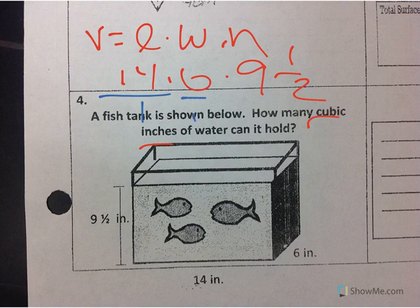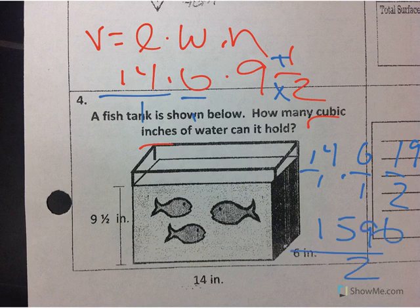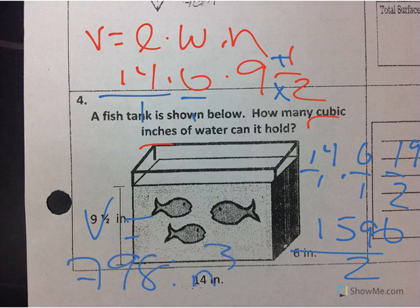I'm going to change this one to an improper fraction by multiplying and adding, so I get 19 over 2. Now I have 14 over 1 times 6 over 1 times 19 over 2. I'm going to multiply: 14 times 6 is 84, times 19 is 1,596, and I'm going to divide that by 2, which gives me the total volume of this fish tank as 798 inches cubed.